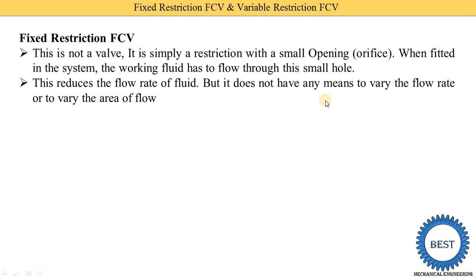It does not have any means to vary the flow rate or to vary the area of flow. In an orifice, a small fixed diameter is there, so we are not able to change this diameter. If we cannot change the diameter, then the area is not changed. We know that flow rate Q is equal to area multiplied by velocity. In any type of flow controller, we consider the velocity is constant. So by changing the area, we only change the flow rate. If we increase the area, flow rate increases; if we reduce the area, flow rate decreases. By using fixed restriction FCV, we are only able to reduce the flow rate.